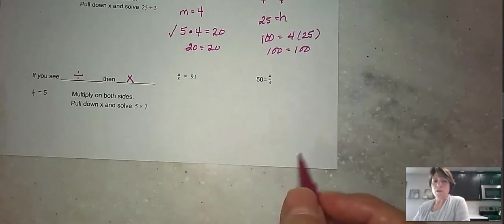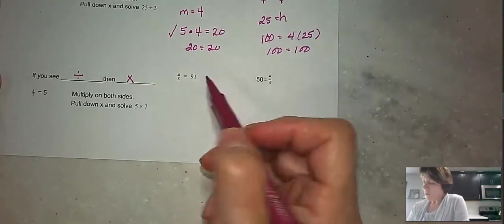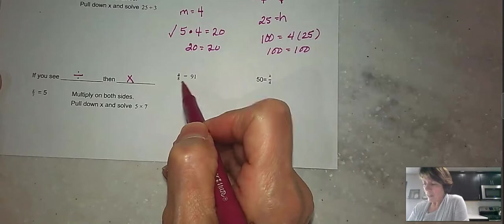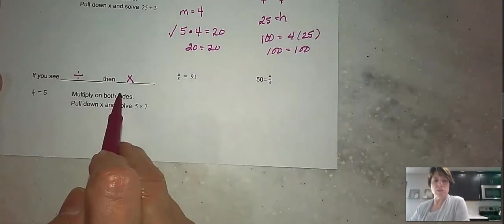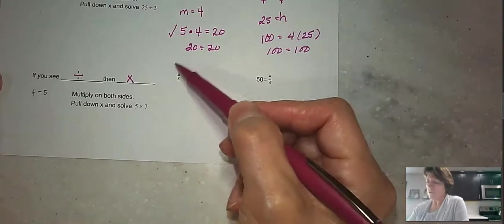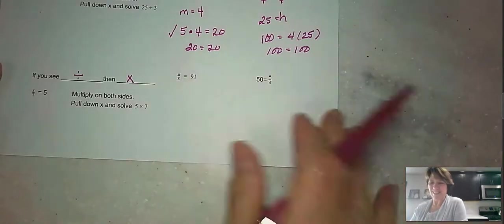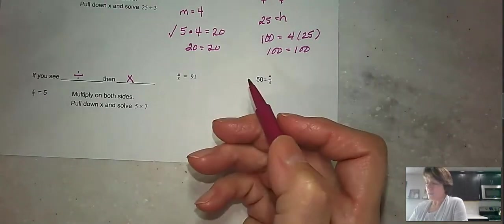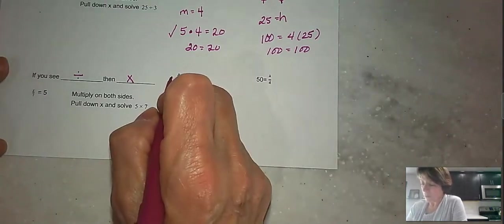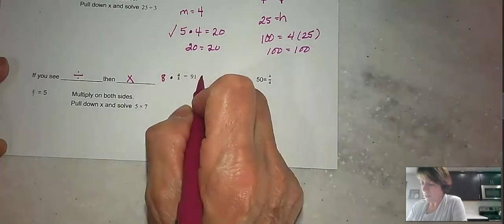Okay, so let's look at a couple of division problems here. So we have n divided by 8 equals 91. Now we know that the opposite of division is multiplication. And then just a reminder that when we see a fraction bar, that is a division problem. So we've got n divided by 8 equals 91. The opposite of that is multiplying by 8. So we're going to multiply both sides by 8.